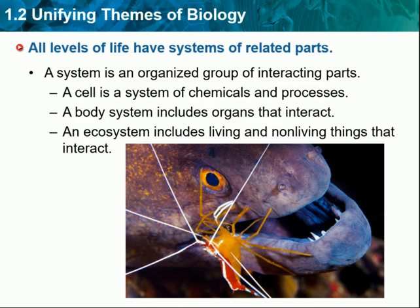When you hear the term ecosystem, you might think about a large region such as a desert, a coral reef, or a forest. But an ecosystem can also be very small in area, such as an individual tree. Different biologists often study different systems. A person might focus on biochemical interactions in a cell, while a person studying bird behavior might focus on predator-prey relationships in an ecosystem. However, more and more biologists are working across different system levels — for example, some scientists study how chemicals in the brain affect social interactions.